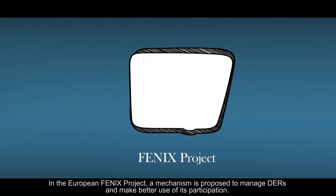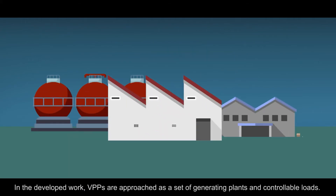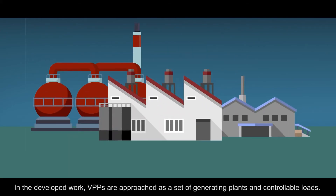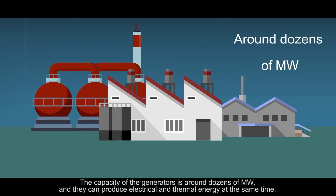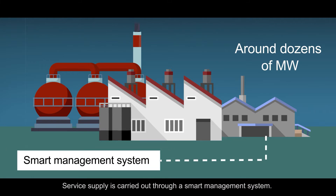In the European Phoenix project, a mechanism is proposed to manage distributed energy resources and make better use of its participation. In the developed work, virtual power plants are approached as a set of generating plants and controllable loads. The capacity of the generators is around dozens of MW, and they can produce electrical and thermal energy at the same time. Service supply is carried out through a smart management system.